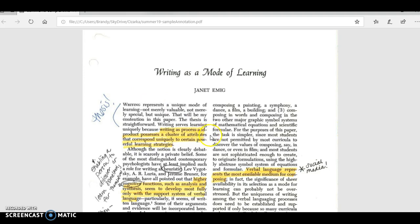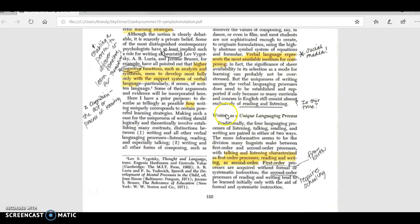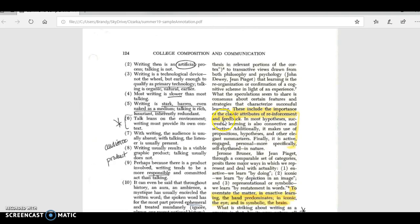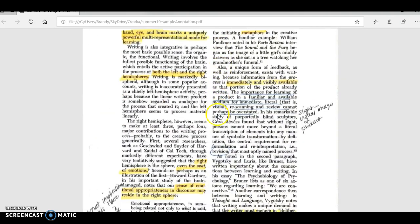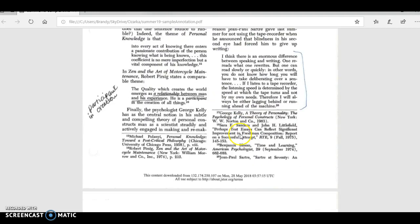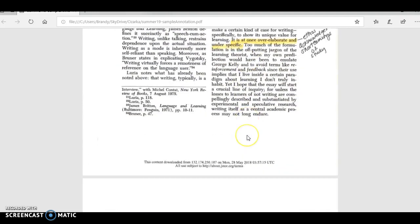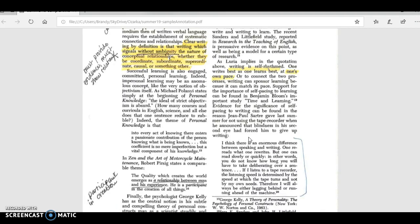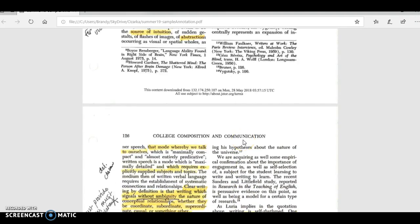I have this article here called 'Writing as a Mode of Learning' by Janet Emig, and this is what a traditional annotation would look like. But I'm not going to require that everybody has a scanner for this class. Also, I need a basic way to grade you on this, so we can't do the annotations this way.